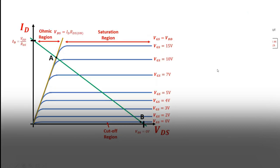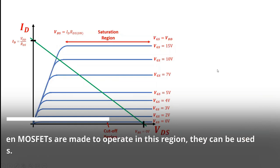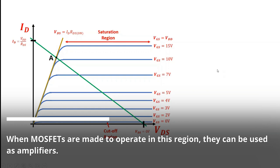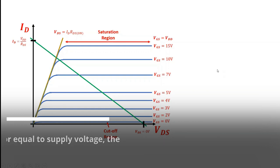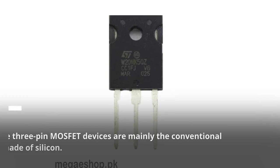The third region is called the ohmic or linear region where the drain current increases with an increase in the value of drain source voltage. When MOSFETs are made to operate in this region, they can be used as amplifiers. When the input voltage is very high or equal to supply voltage, the MOSFET Q point moves to point A along the load line.